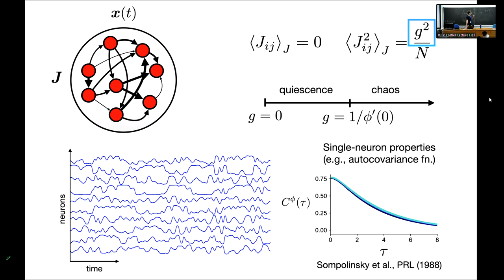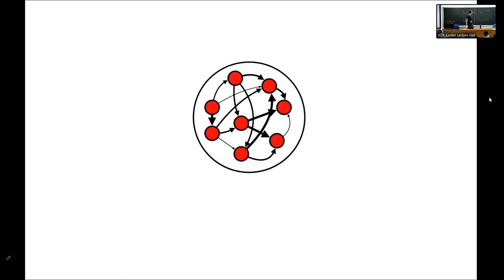Haim Sompolinsky taught us how to solve this model in the late 80s. In particular, there's a dynamical mean field theory that allows you to compute the single neuron two-point function. So if you want to know the temporal statistics of individual neurons in this network, there's a well-known dynamical mean field theory that allows you to do that.